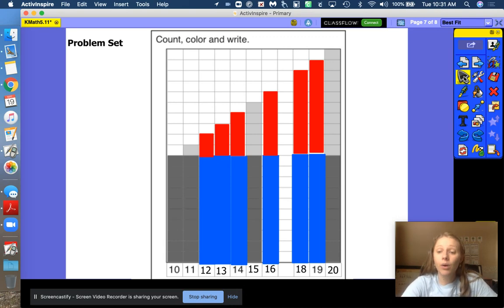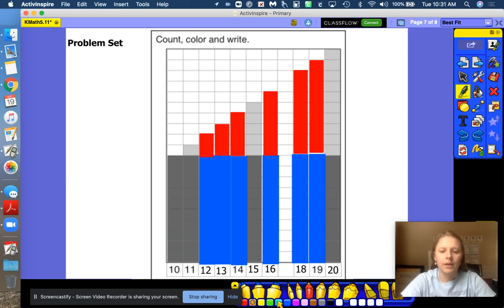All right, friends. Here's baby bear stairs. And most of them are filled in. We're just going to fill in one. So on your paper or on your whiteboard, I want you to help me fill in the missing step. First, let's figure out which step is missing. Get my marker ready. All right. 10, 11, 12, 13, 14, 15, 16. What number is missing?